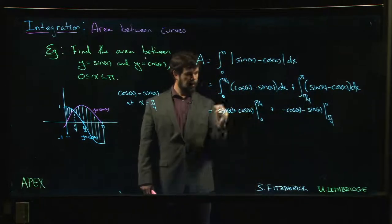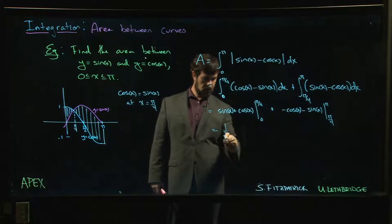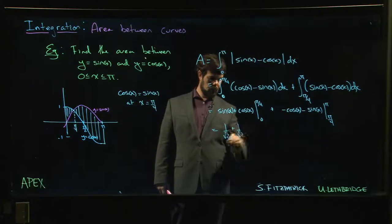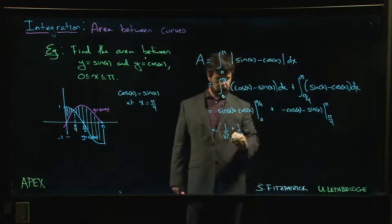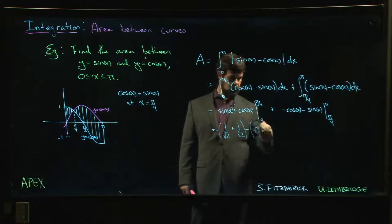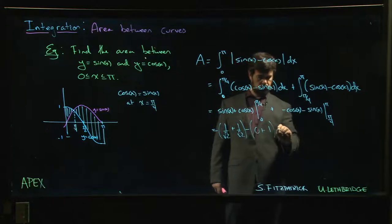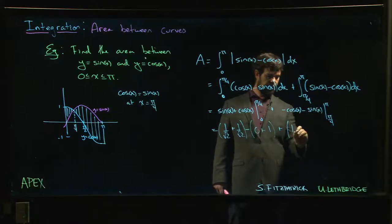Now we plug in the endpoints. At π over 4, sine of π over 4 is 1 over √2, cosine of π over 4 is 1 over √2. At 0, sine of 0 is 0, cosine of 0 is 1. Now we put the other ones in: cosine of π is minus 1, so minus minus 1 is 1. Sine of π is 0.